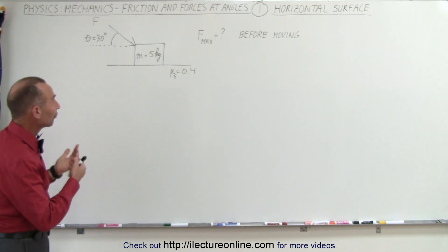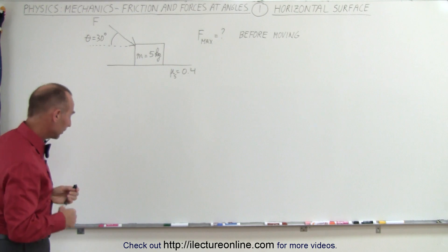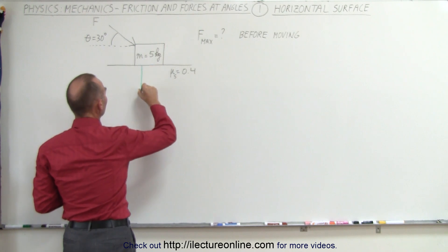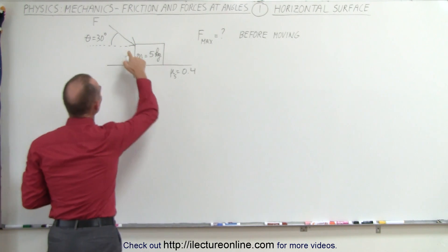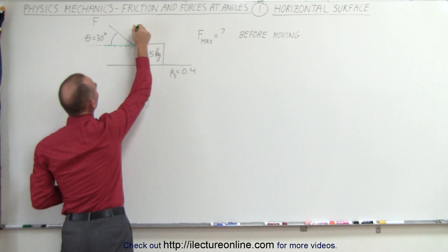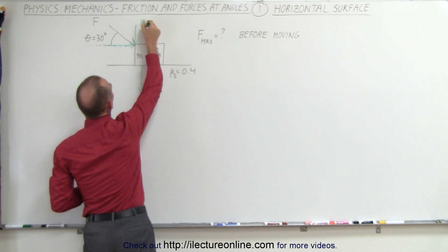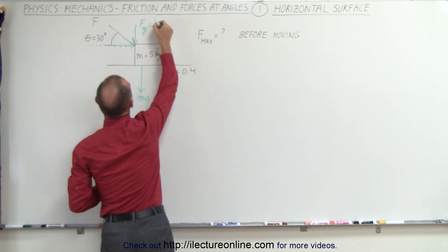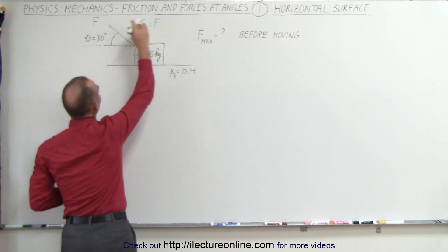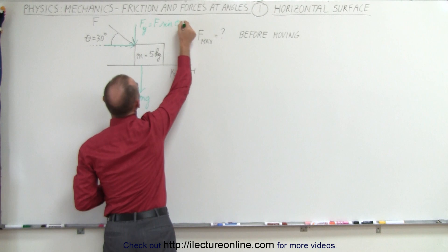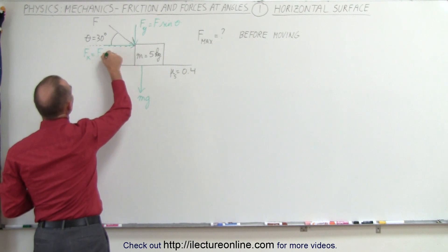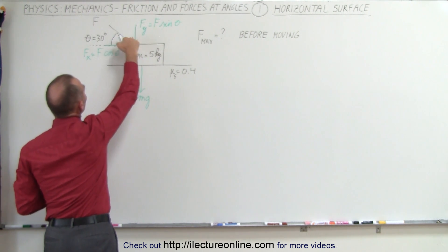Let's first determine all of the forces acting on that block. We have the force of gravity acting downward, so we have mg. Then we have this force acting at an angle, which means there is a horizontal component and a vertical component of that force. The vertical component, f sub y, is equal to f times sine of theta, because this is the opposite side to the angle. For the horizontal component, f sub x, is equal to f times cosine of theta — the adjacent side to the angle.